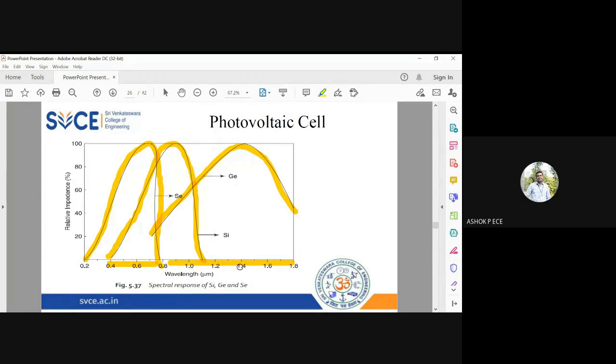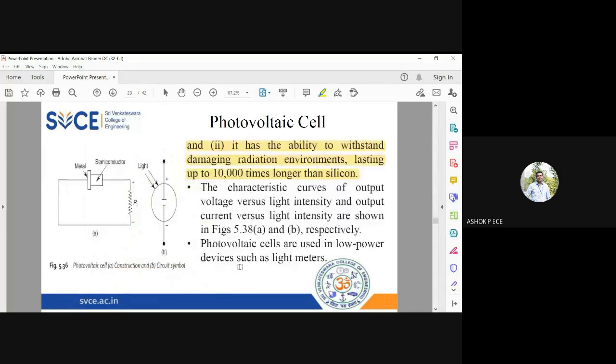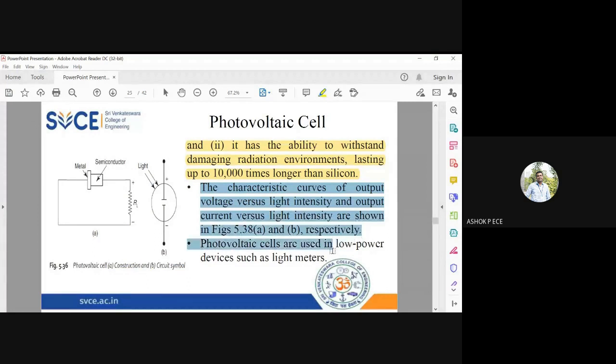The characteristic curves of output voltage versus light intensity and output current versus light intensity are shown. Photovoltaic cells are used in low-power devices such as light meters. In cricket matches, umpires use a black device focused toward the sun to measure sunlight intensity and decide whether to continue or stop play.